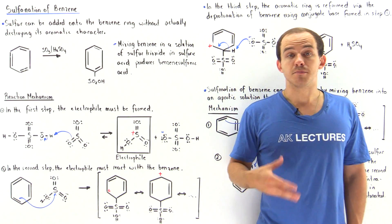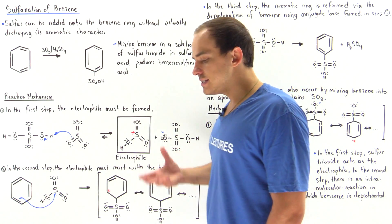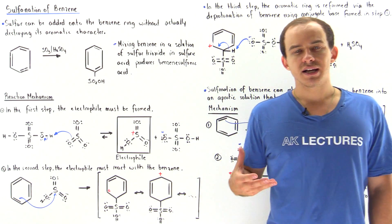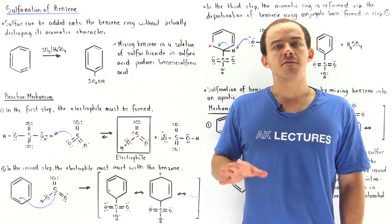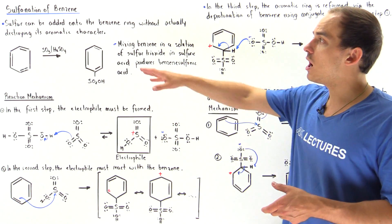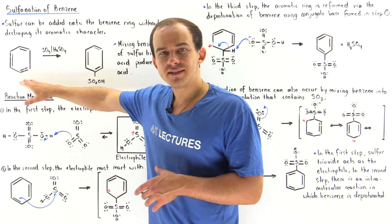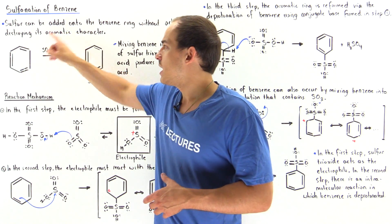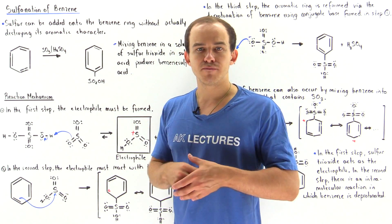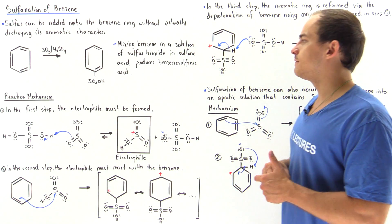Sulfonation of benzene is the process by which a benzene molecule is used to form benzene sulfonic acid. This reaction takes place without actually breaking the aromatic character of the benzene molecule. In this lecture we're going to discuss the reaction mechanism of sulfonation of benzene, where benzene is placed into a mixture of sulfur trioxide mixed with sulfuric acid to form the final product, benzene sulfonic acid.